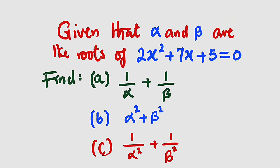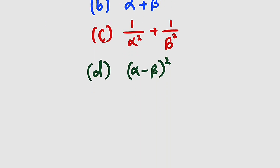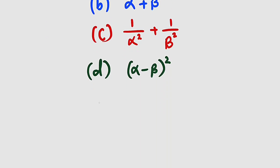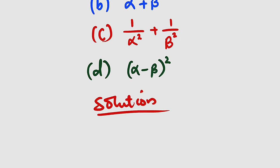Whenever you are given a problem like this, it is not necessary that you have to find the roots. You don't need to get the two roots alpha and beta before you substitute them. That is not necessary. The only two things you need to find are the sum and the product of the roots.